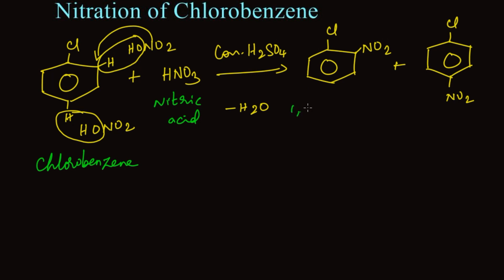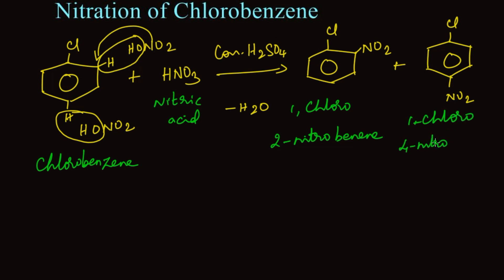We get the product 1-chloro-2-nitrobenzene and 1-chloro-4-nitrobenzene. The para isomer is the major product and the ortho isomer is the minor product.